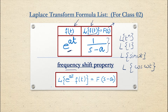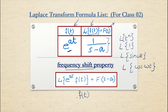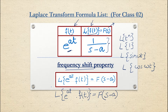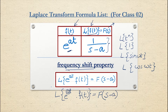We will be solving questions based on the frequency shift property. Suppose a function is in the time domain and you multiply it with an exponential function e^(at). After performing the Laplace transform on this product, you get a function of s minus a. You are shifting the variable s by a, and that a comes from e^(at). Because of this shift in the frequency variable, we call it the frequency shift property.